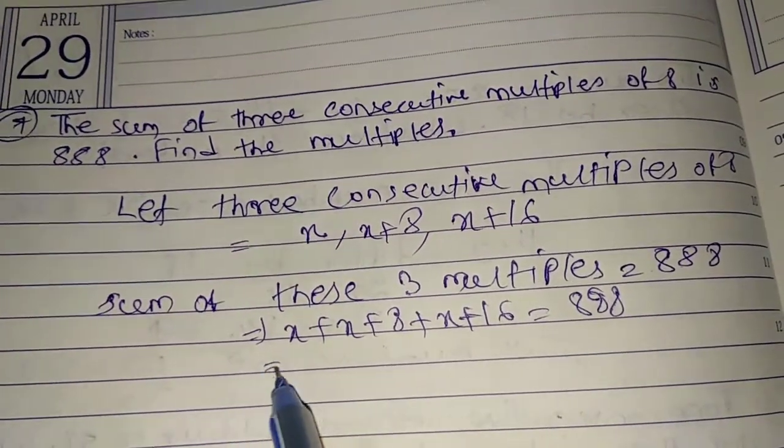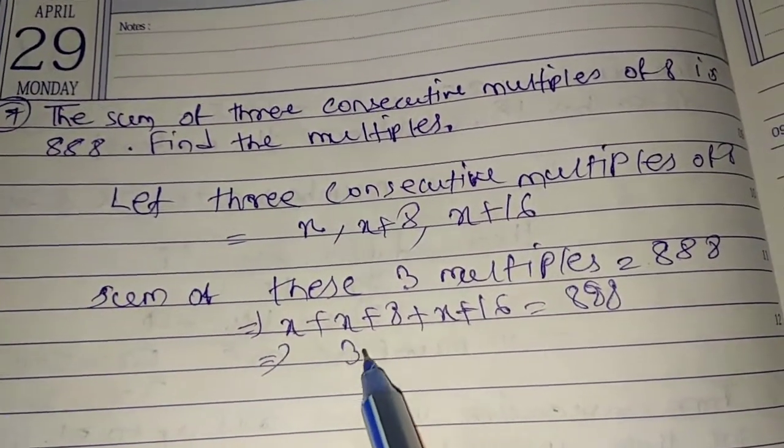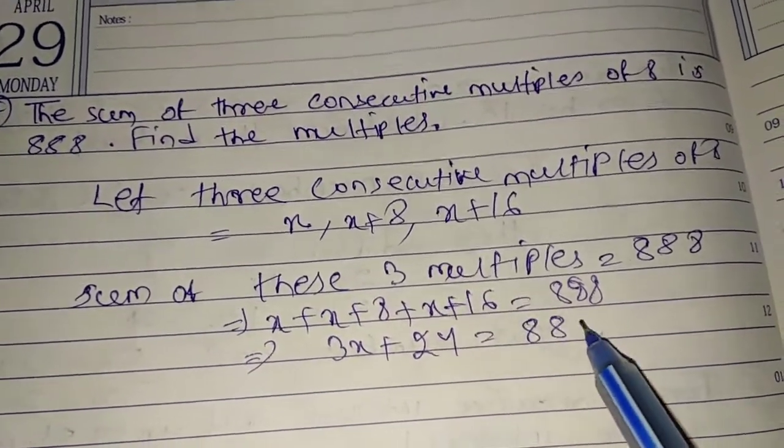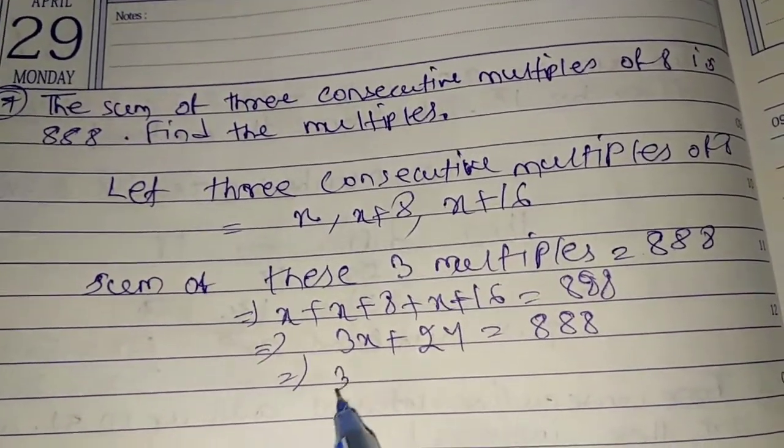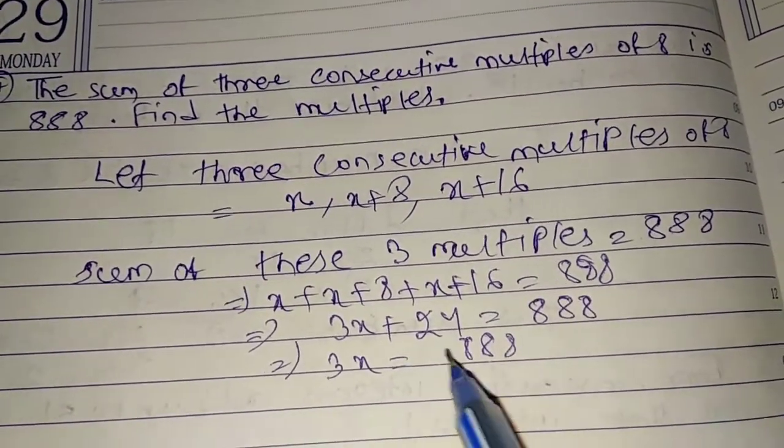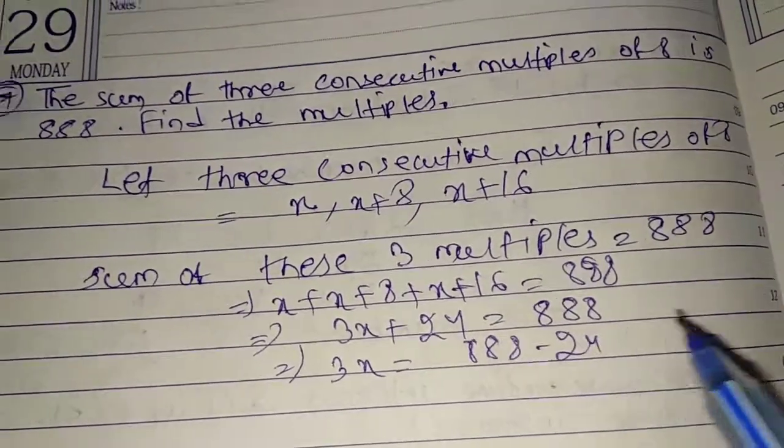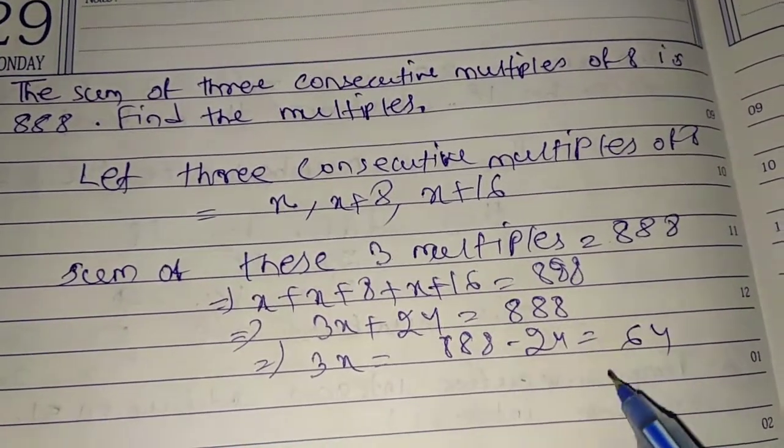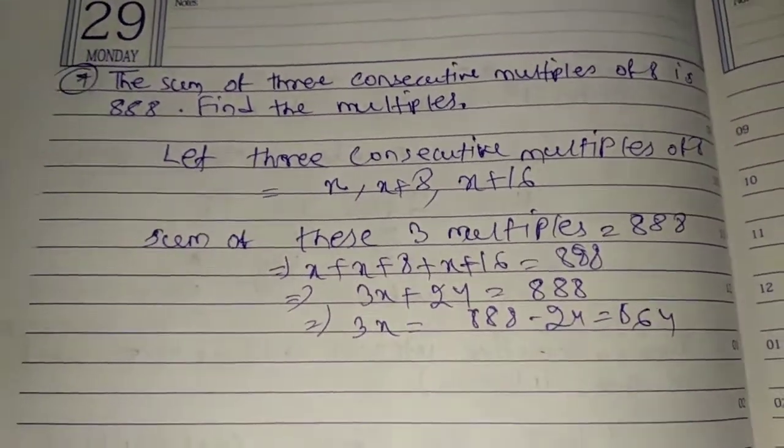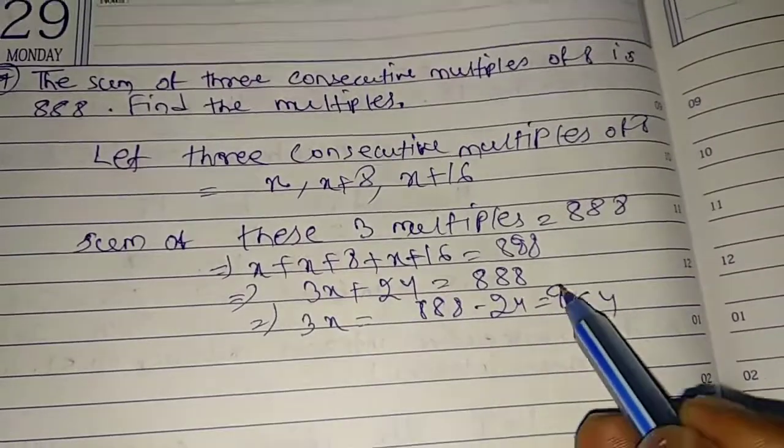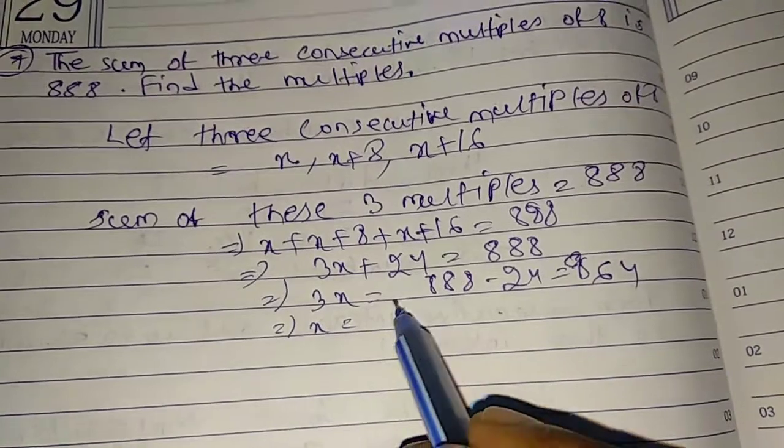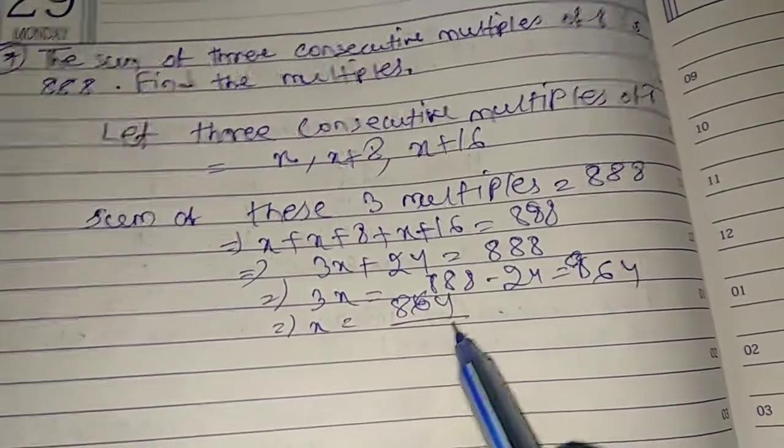3X plus 24 equal to 888. Then 3X equal to 888 and 24 goes to right hand side and got subtracted, 864.